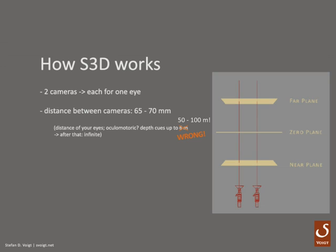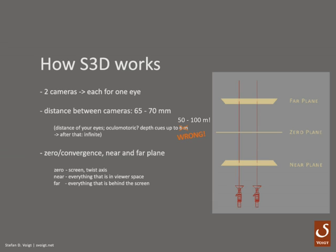In stereoscopic 3D we have three thought planes to work with: zero, near, and far plane. The zero plane marks everything that appears to be on the cinema screen or silver screen. Everything between zero and near plane appears to come out of the screen, and everything between zero plane and far plane appears to be behind the screen. Speaking in terms of parallax, the zero plane is called zero parallax because the left eye sees the same as the right eye in this specific area — so there is no parallax.